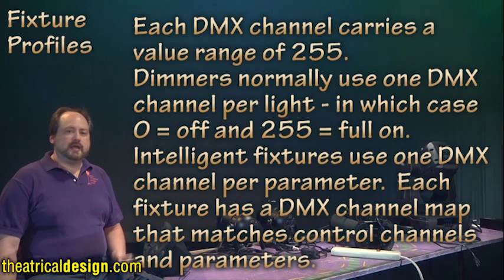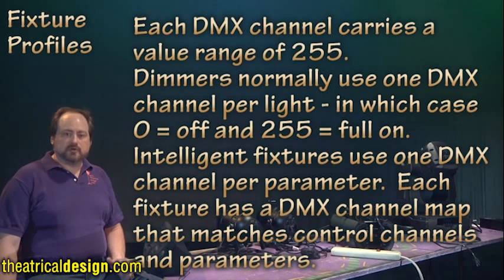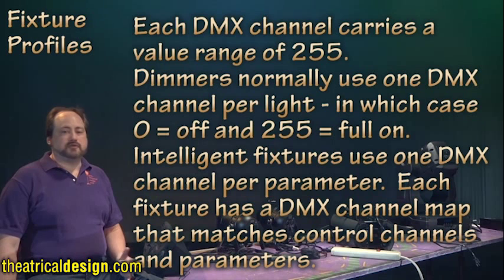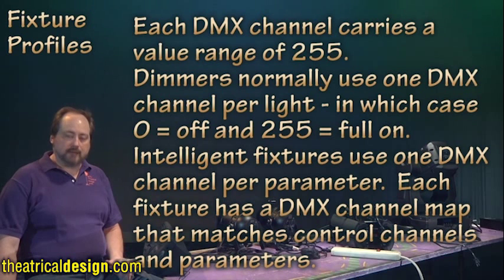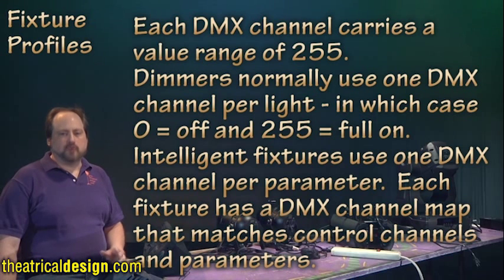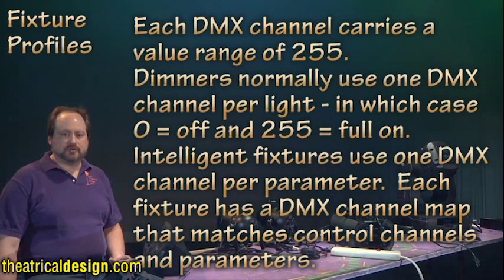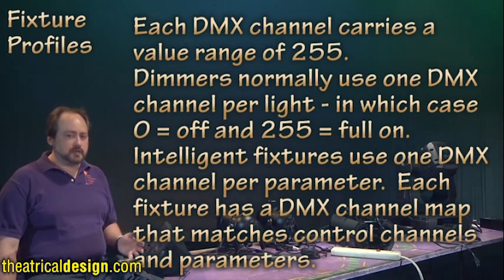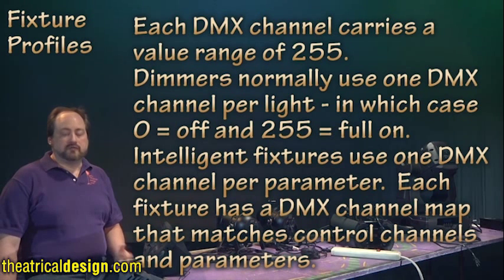Fixture profiles: Each DMX channel carries a value range of 255. Dimmers normally use one DMX channel per light, in which case zero equals off and 255 equals full-on. Intelligent fixtures use one DMX channel per parameter. Each fixture has a DMX channel map that matches control channels and parameters. These maps can vary between manufacturers and even fixtures within manufacturers. As an example, a relatively simple LED PAR unit, which doesn't physically move, may only have three channels, one for each color.